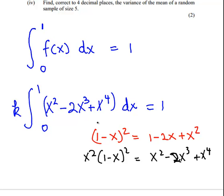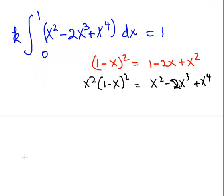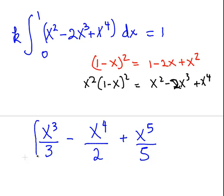I'm going to replace that with x² - 2x³ + x⁴. This is a straightforward definite integral, ignoring the k. So that would be x cubed over 3 minus 2x³, that would be 2 times x⁴ over 4, I can simplify that, cancel the 2 and the 4 to just have it over 2.